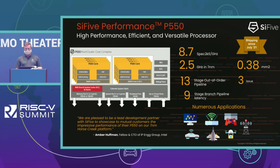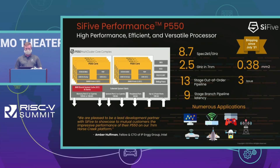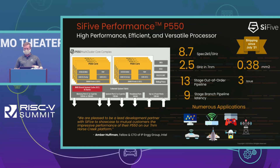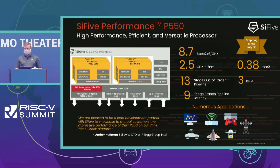Some of the metrics that we've been announcing both in presentations earlier today and in some of our press releases are about the performance or PPA numbers that we've been achieving. For this July 2021 release, the P550 has been hitting about 8.7 SPECint 2K6 per gigahertz, which we've been comparing favorably against Cortex-A75 class performance. In terms of frequency, we've been targeting the TSMC 7 nanometer process and getting around 2.5 gigahertz, all within an area of less than 0.4 millimeters squared.